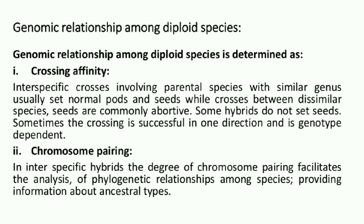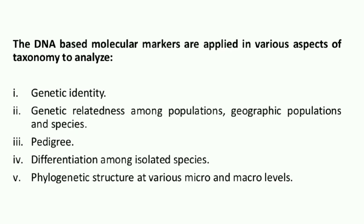Crossing affinity means during meiosis there will be crossing over between the chromatids of the two non-sister chromosomes or two non-sister chromatids. Chromosome pairing — during the leptotene and zygotene of meiosis I, there will be pairing or synapsis. The synapsis pattern will help in identification of the plant species. DNA-based molecular markers are applied in various aspects of taxonomy to analyze genetic identity, genetic relatedness among populations, geographic populations and species, and to identify the pedigree of the plant. Differentiation among isolated species — two species which have been isolated many years back can be differentiated for characters developed after many years. Phylogenetic structure at various micro and macro levels can be determined by using molecular data.